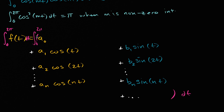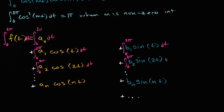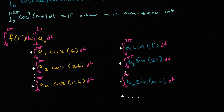From our integration properties, taking the definite integral of a sum — even an infinite sum — is the same as the sum of the definite integrals. So we get the integral of each term from zero to two pi dt. We can take the scalar coefficients — a sub one, a sub two, b sub one — out in front of each integral sign, leaving just the integral from zero to two pi of cosine of some integer multiple of t dt.